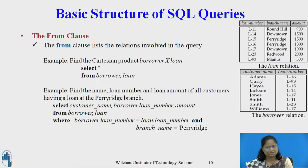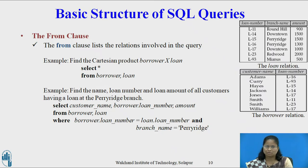The FROM clause lists the relations involved in the query. Example: find the Cartesian product of borrower and loan — SELECT * FROM BORROWER, LOAN. Second example: find the name, loan number, and loan amount for all customers having a loan at the Perryridge branch — SELECT CUSTOMER_NAME, BORROWER.LOAN_NUMBER, AMOUNT FROM BORROWER, LOAN WHERE BORROWER.LOAN_NUMBER = LOAN.LOAN_NUMBER AND BRANCH_NAME = 'Perryridge'. SQL uses the notation relation_name.attribute_name to avoid ambiguity when an attribute appears in the schema of more than one relation.